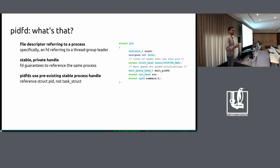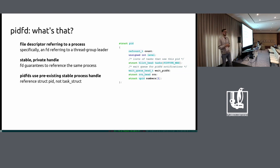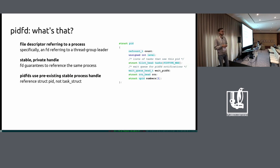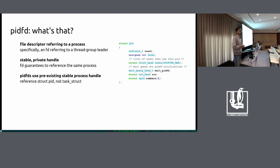So LWN did a good job. The basic idea: it's a file descriptor that refers to a process, which is not a new idea. Specifically the way we did it for the initial implementation is that it's an FD which refers to a thread group leader. Right now you cannot have a PIDFD that refers to a single thread, because we didn't have a use case for it. The idea is that a PIDFD serves as a sort of stable and private handle that guarantees it will always refer to the same process.